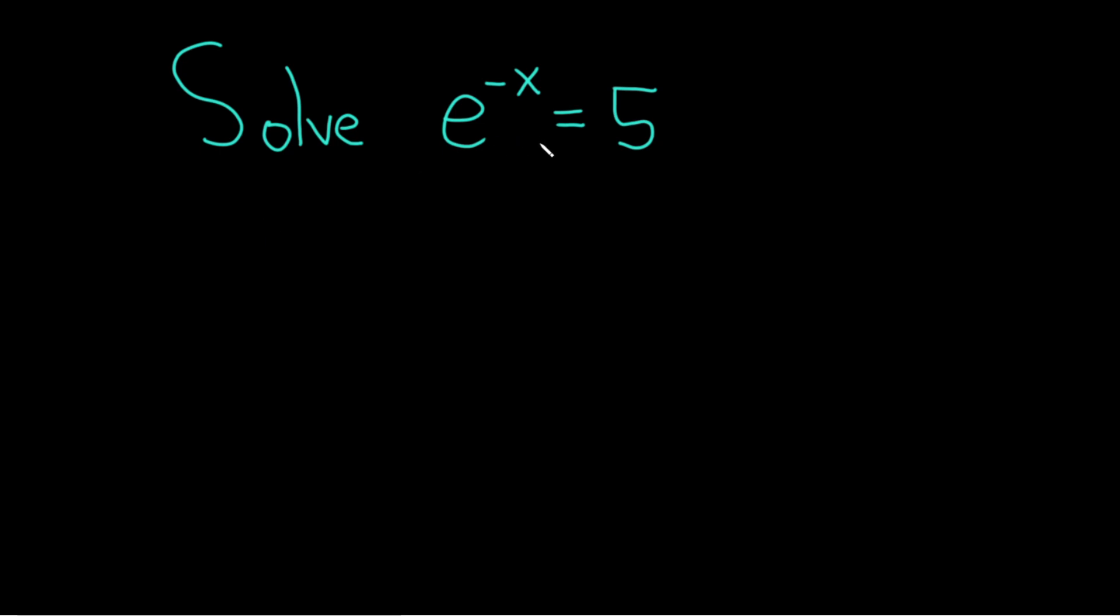Solve e to the negative x equals 5. Solution: To solve this for x, we have to basically get rid of the e. So in order to do that, what we'll do is we'll take the natural log of both sides like this. So we have e to the negative x equals 5, so we'll put a natural log here and we'll also put one here.